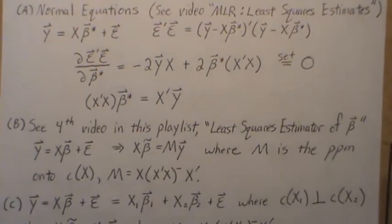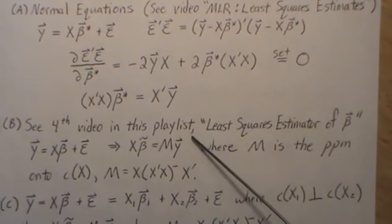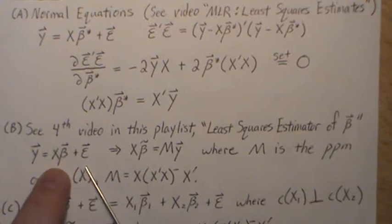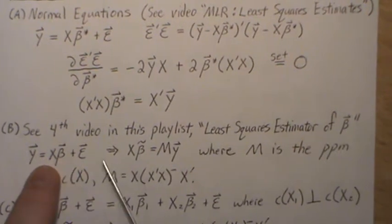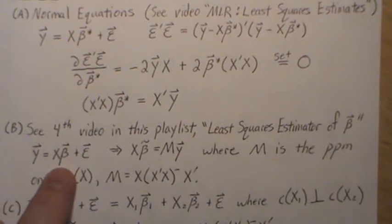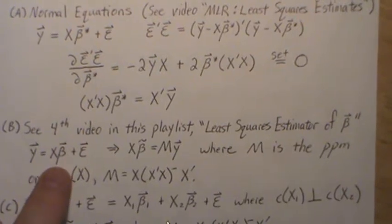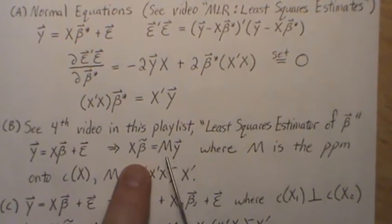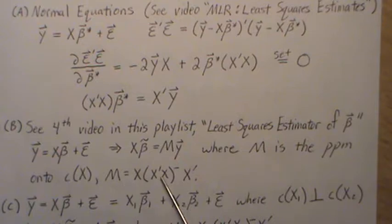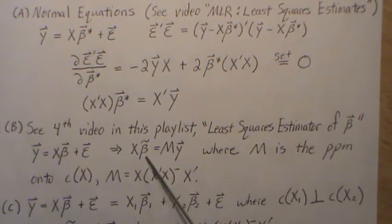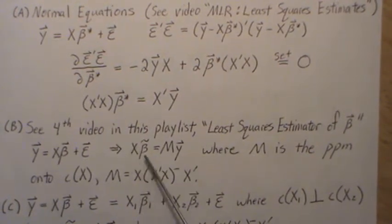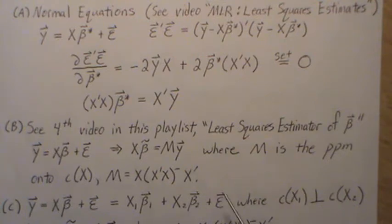Now, the next one, the fourth video in this playlist, I'm calling it Least Squares Estimator of Beta. If we look at this linear model, the least squares estimate for beta—remember we're in the setting where x is not full column rank, so we don't get a unique estimate. But we did prove that it has to satisfy this, where M is the perpendicular projection matrix onto the column space of x defined like this. And what's interesting, even though the least squares estimate for beta is not unique, this is unique, and it's the fitted model, which is a nice property.